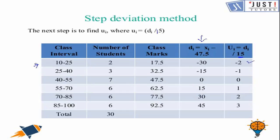minus 30 divided by 15 is minus 2. Minus 15 divided by 15 is minus 1. 0 divided by 15 is 0. 15 divided by 15 is 1. 30 divided by 15 is 2. And 45 divided by 15 is 3. So we have found out ui as well.